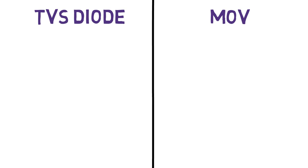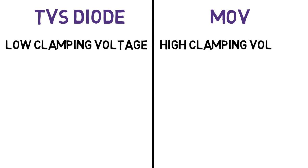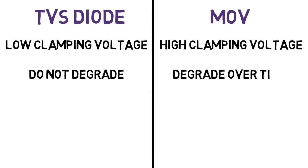However, MOVs and TVS diodes serve the same purpose as the protection of component from the transient. Then the question arises, what is the difference between both of them? The TVS diode has a lower clamping voltage with respect to MOVs. They have a comparatively higher clamping voltage range. The TVS diode do not degrade over time if they are used in the boundaries of protection. But MOVs, on the other hand, degrade as it gets older even if there is no transient state occurred.